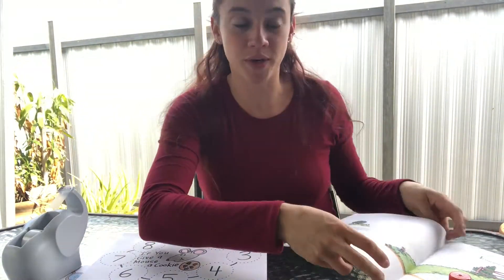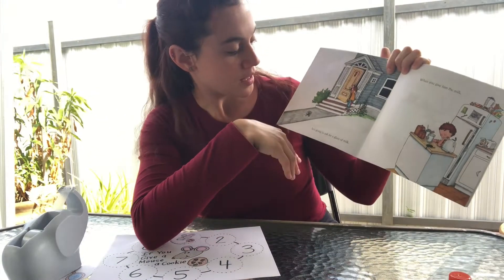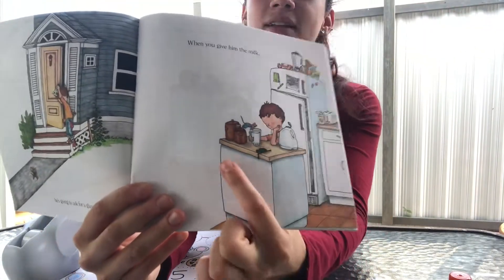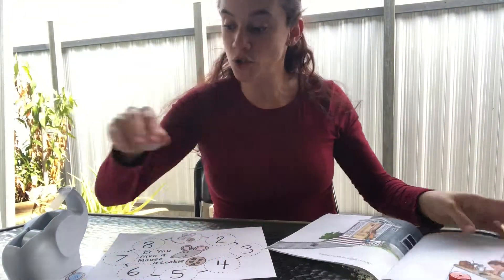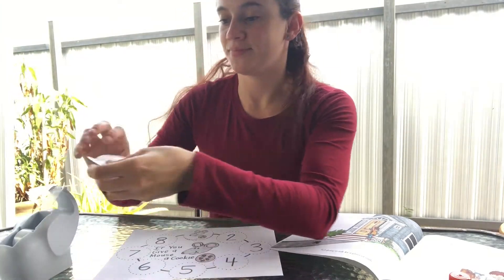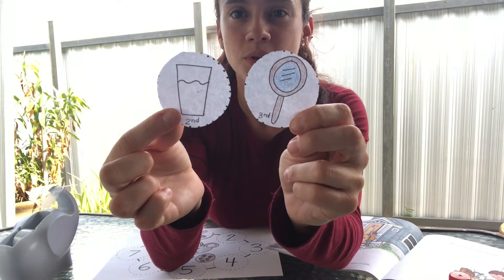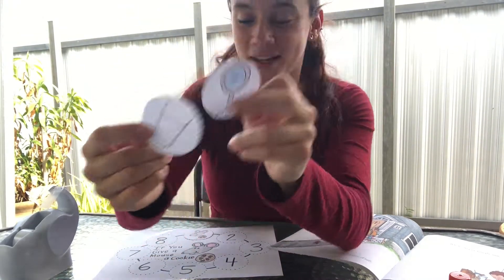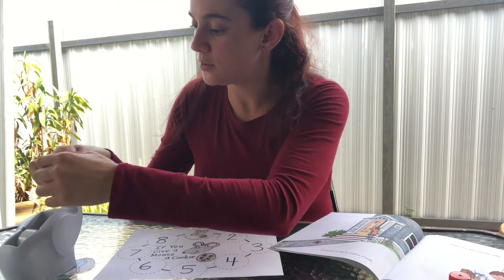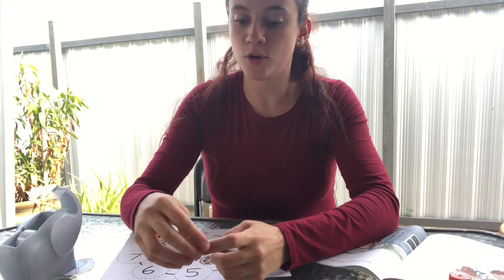Let's keep going with the story to see what's next. If you give a mouse a cookie, he's going to ask for a glass of milk. So which one comes next on number two? You got it — this one! Let's put a little piece of tape so we can paste the milk picture on number two.